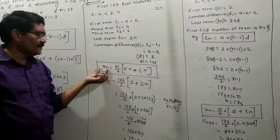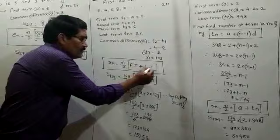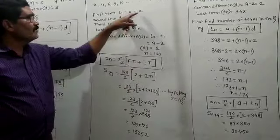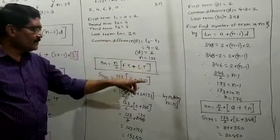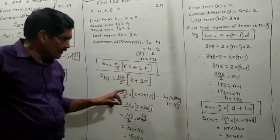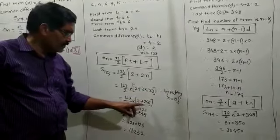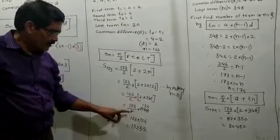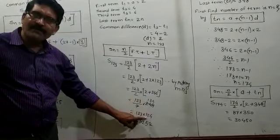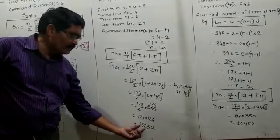Then, you have to utilize the formula SN equals N upon 2 into first term plus last term. Putting N equal to 123 upon 2, first term is 2 and last term is 2N. Since N is 123, last term is 2 multiplied by 123 which equals 246. Then 246 plus 2 equals 248. So we have 123 upon 2 multiplied by 248. Since 2 and 248 give 124, we get 123 multiplied by 124. The sum of 123 even natural numbers comes to 15252.